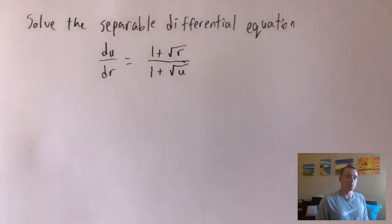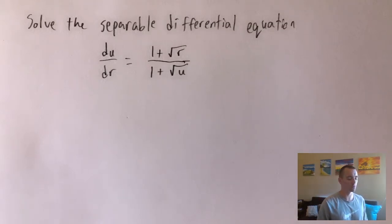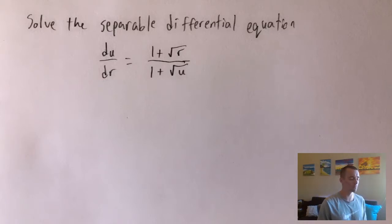Hey guys, Jake here coming at you with another math problem today. I'm going to be showing you how to solve the separable differential equation du/dr equals 1 plus the square root of r, all over 1 plus the square root of u.